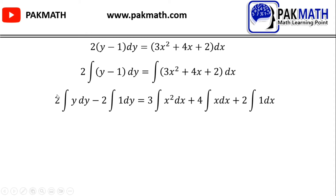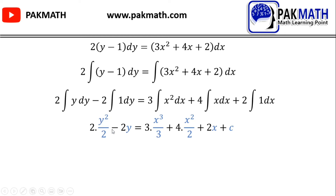After taking integration we get: 2 · (y²/2) − 2y = 3 · (x³/3) + 4 · (x²/2) + 2x + C.